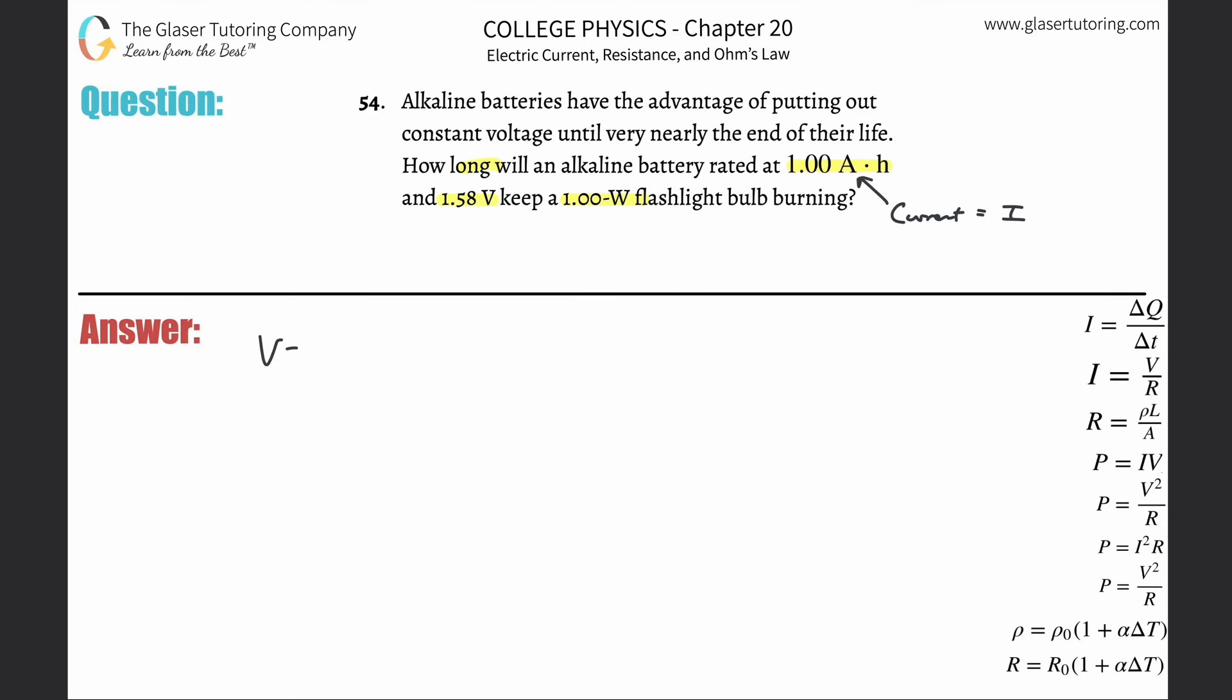Knowing the voltage that's being supplied by the battery, 1.58 volts, and knowing the power of that battery producing one watt of power, can I find current knowing these two pieces of information? Well it turns out that we can. What's the formula? P equals IV, power is equal to current multiplied by voltage.